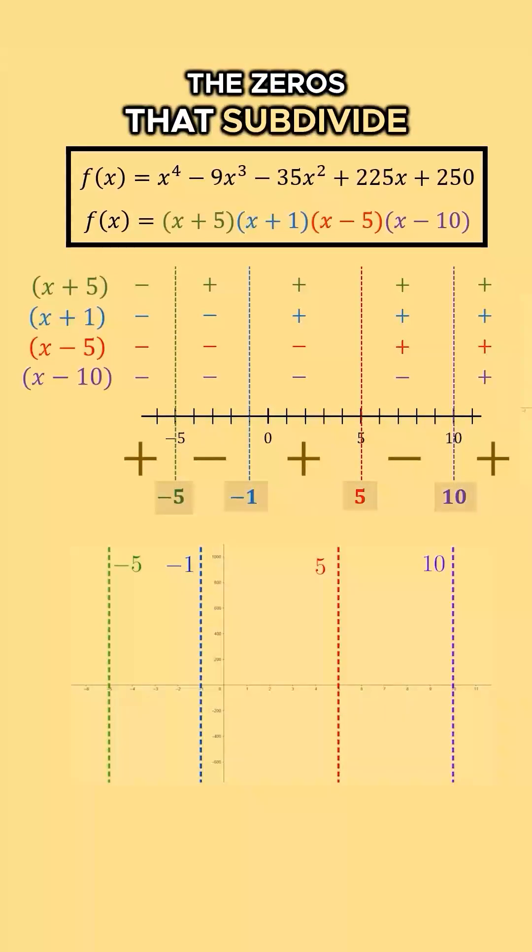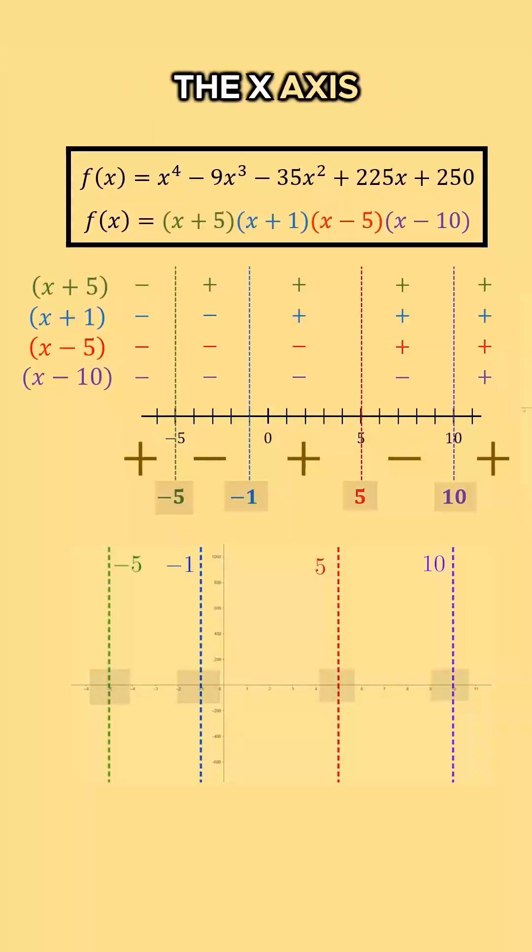The zeros that subdivide our number line are the x-intercepts, so that's where our function will cross the x-axis.